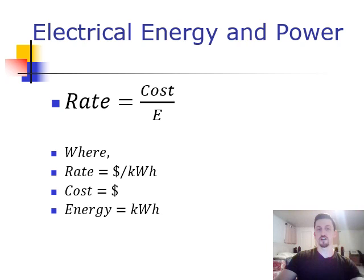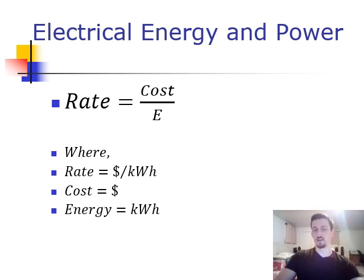This last page is talking about the rates and costs of energy. Rate is equal to cost divided by energy — your rate would be the dollars per kilowatt-hour, which is what your electric company would be charging you. Cost would be the total dollars that you're spending, and E would be the energy you use in kilowatt-hours. We looked at a couple of problems that deal with this, so hopefully it's not too crazy. Understanding this might help you guys out in the future when you have your own electric bills to pay — it's good stuff to understand.